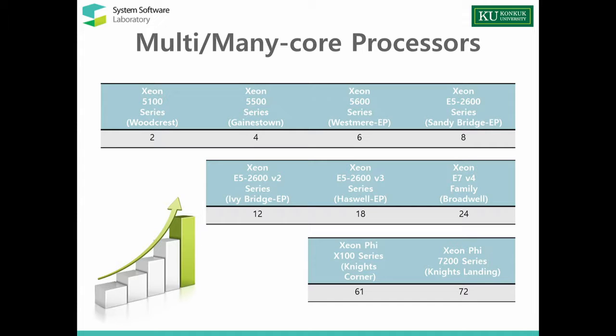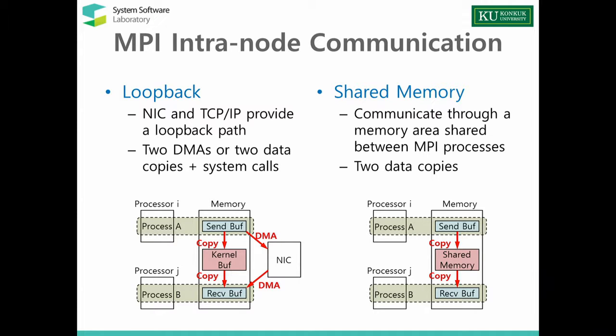As you know, the number of cores installed on a single CPU package is drastically increasing. For example, Knights Landing can have 72 cores, and this large number of cores emphasizes the importance of intranode communication. There are several schemes to handle MPI intranode communication. Loopback is the basic one — the network interface card and TCP/IP provide a loopback path. In the case of high-speed interconnects that support OS bypassing, the NIC moves the data from the source buffer using DMA, and if the destination process is on the same node, it moves data to the destination buffer via DMA again — so there are two DMAs.